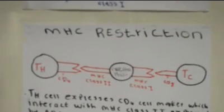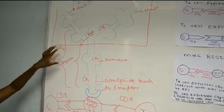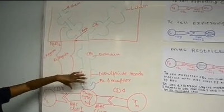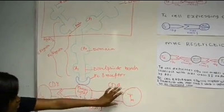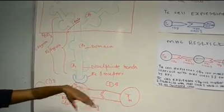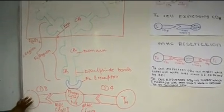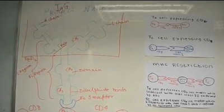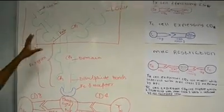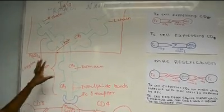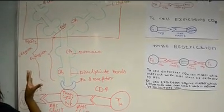The MHC restriction can only interact with the antibody structure of IgG. Here is the antibody structure of IgG, which interacts with this MHC restriction I was talking about before. This is the MHC restriction, which interacts with the antibody structure of IgG. This is the antibody structure of IgG, and this is the end of my project.